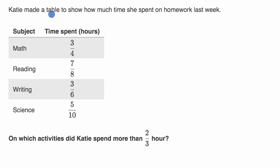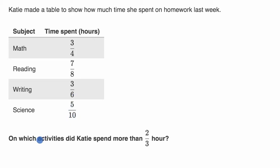We're told that Katie made a table to show how much time she spent on homework last week. We can see the different subjects and how much she spent in terms of hours. In math, she spent three-fourths of an hour; reading, seven-eighths of an hour; writing, three-sixths of an hour; and science, five-tenths of an hour. They ask us on which activities did Katie spend more than two-thirds of an hour.